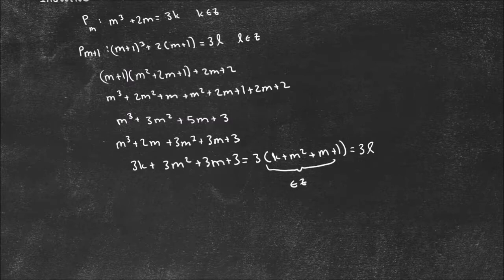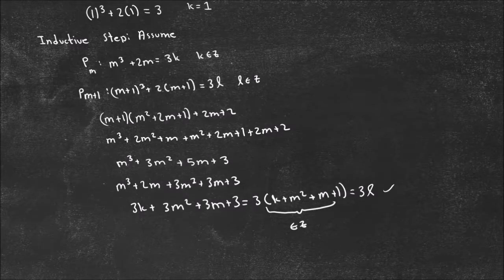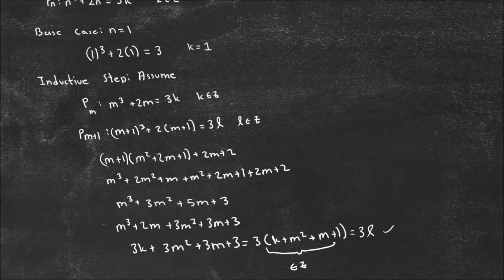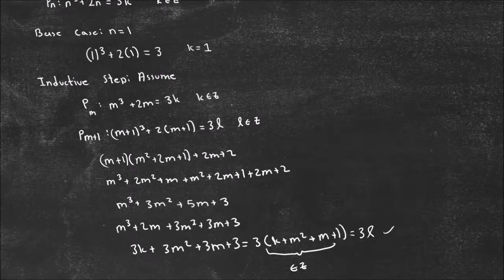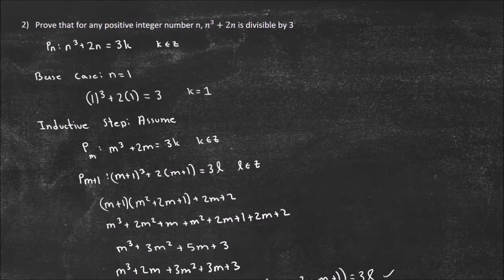That means it's true for all positive integers n because I showed it's true for n equals 1, and the inductive step shows that if it's true for some m, it's true for m plus 1. So it works all the way to infinity, and we've done the proof. Hopefully now you understand what mathematical induction is, what it's good for, and what it's not good for. If you have any questions, don't hesitate to contact me. Thanks for watching.